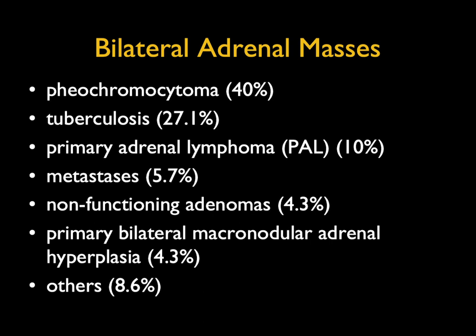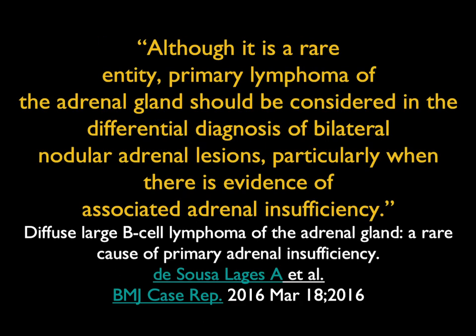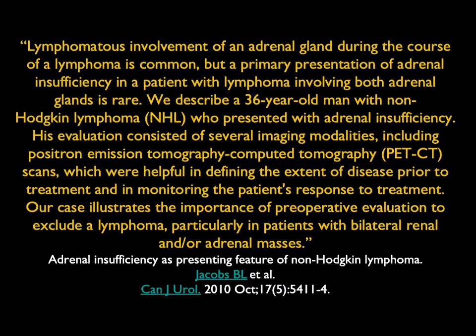In terms of being able to distinguish different lesions as to etiology, bilateral does help. The problem is incidental adenomas, metastasis, pheos, and lymphoma can all be bilateral, so it's helpful but not all that helpful. Primary lymphoma of the adrenal gland is rarely unilateral and more commonly bilateral. In those cases, the adrenals are particularly large, and because they're infiltrated, there is an increased incidence of adrenal insufficiency — so that might be the presentation. Lymphoma involvement of the adrenal during the course of lymphoma is common, but as a primary presentation of adrenal insufficiency, it's relatively rare.